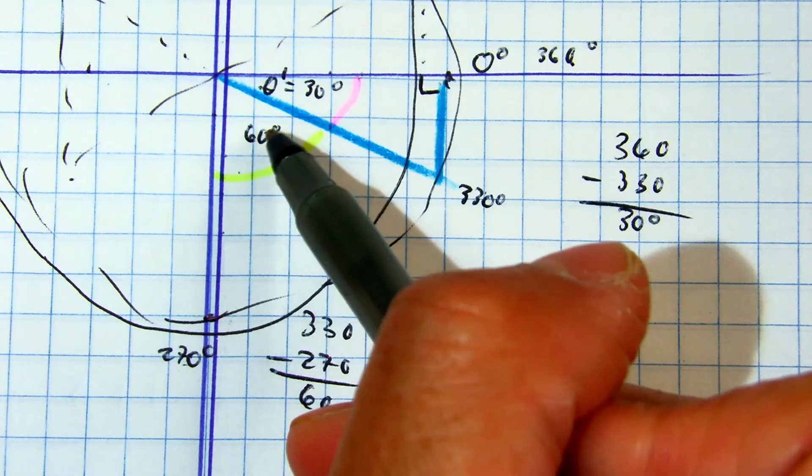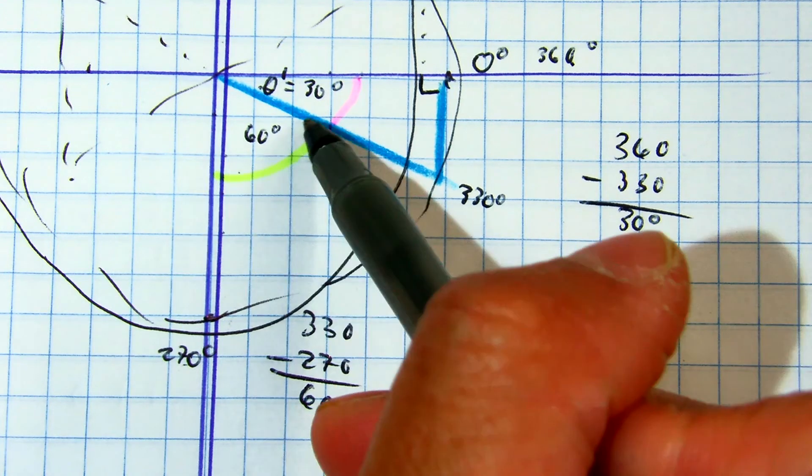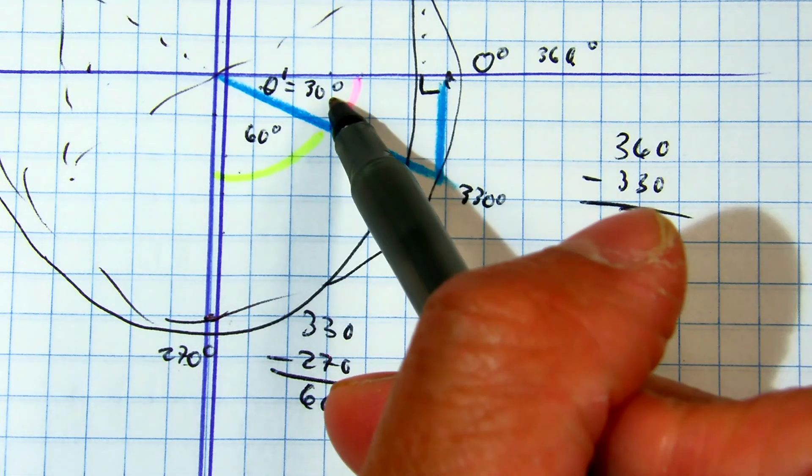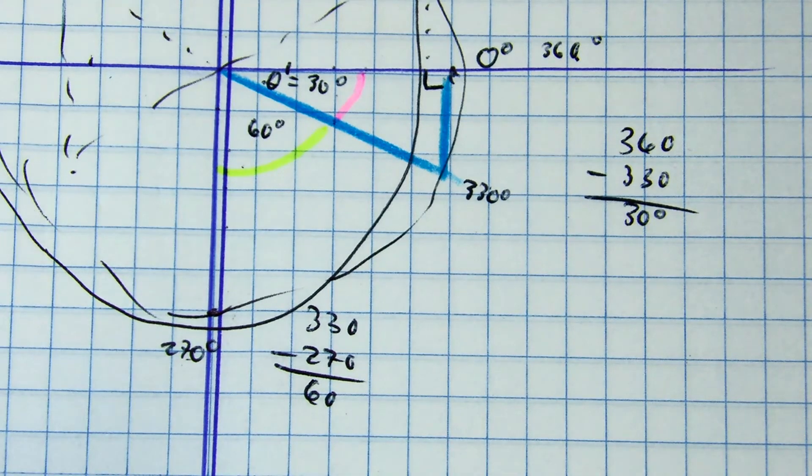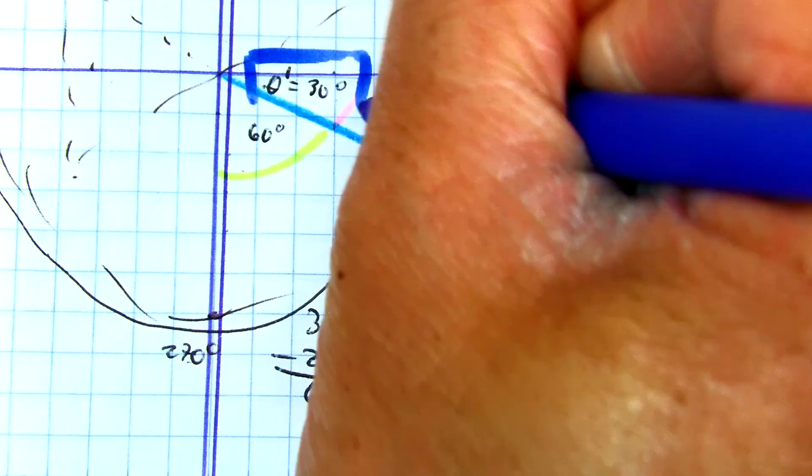So if this is a 60-degree angle, that means this one inside is going to be a 30-degree angle. Okay, that's the answer. The reference angle for 330 degrees is 30 degrees.